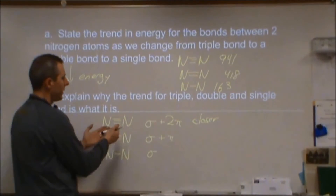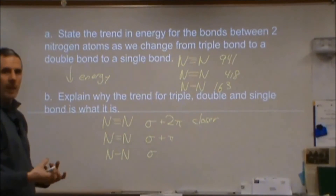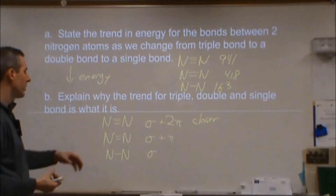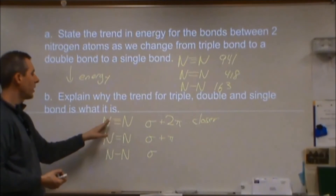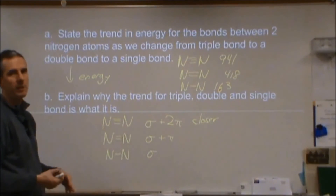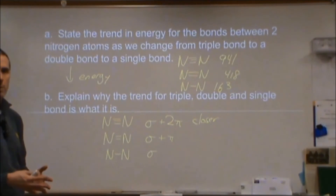At the end of the day, all bonds are electrostatic attraction. What we're seeing is more negative charge between more positive nuclei, and at closer proximity.